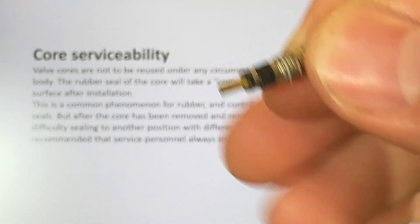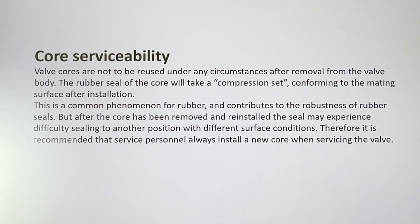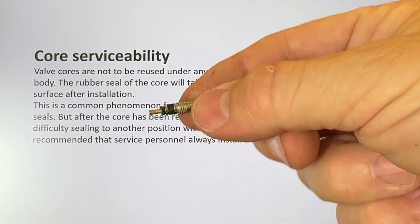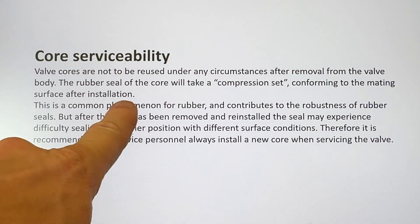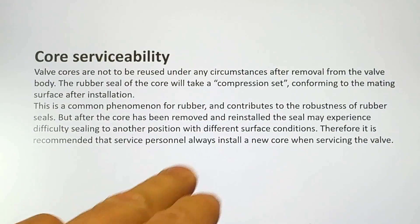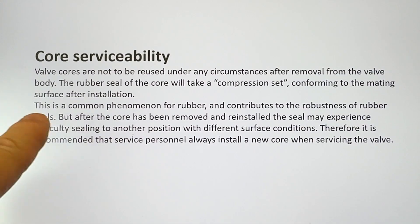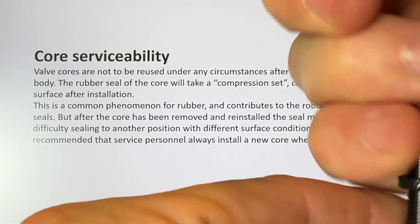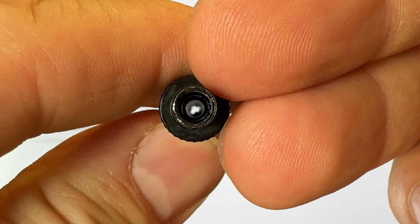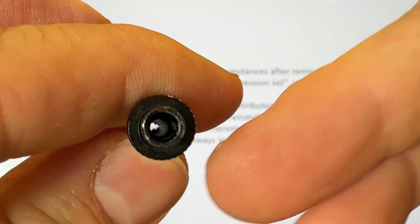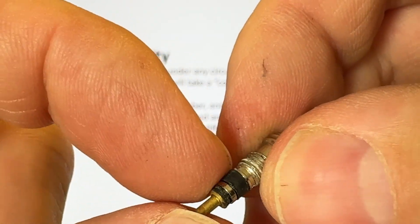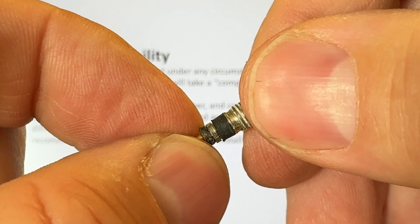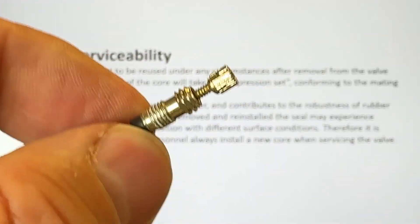Therefore the valve cores, these ones, the whole thing typically are not to be reused because the seal of the core will compression set, conforming to the mating surface after installation. This mating surface is on the inside of this valve. Okay, so the metal surface on the inside of this tube is what this seal is compressed against tightly when it's threaded in with the core removal tool.